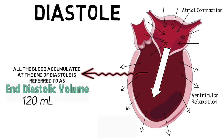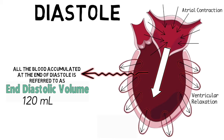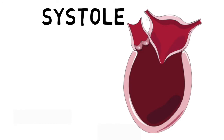The ventricle has to relax and stretch out nicely to make it easier for the atrium to pump blood into the ventricle. This stretch felt by the ventricle at the end of diastole is called the preload. At this point, the ventricle is ready to pump the blood out into the periphery, which is done in the second phase of the cardiac cycle called the systole.